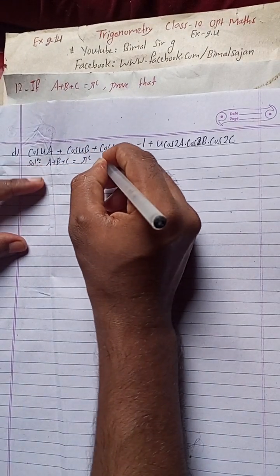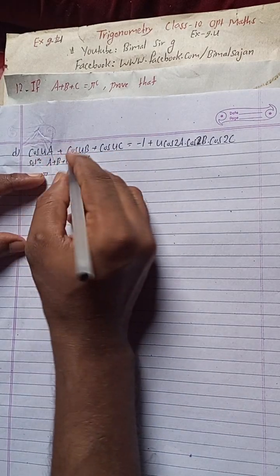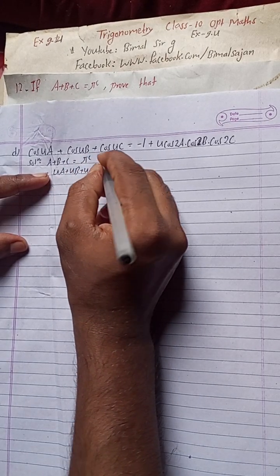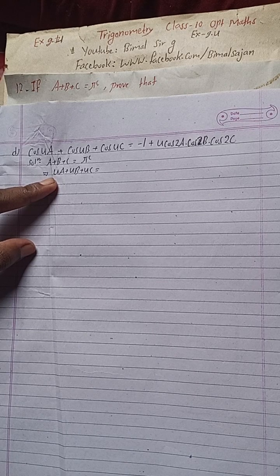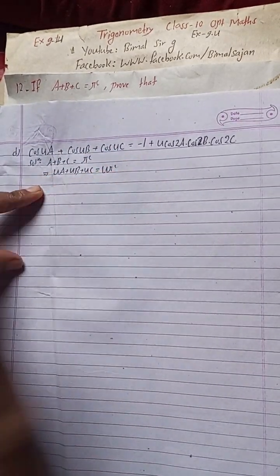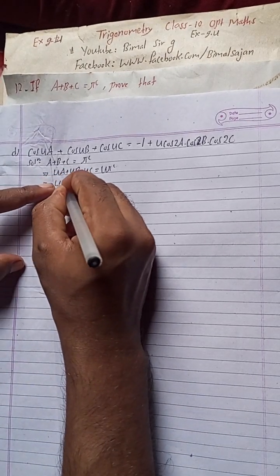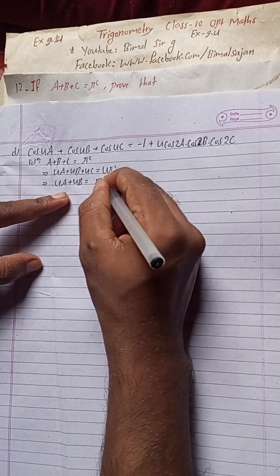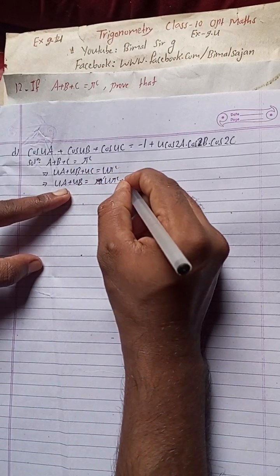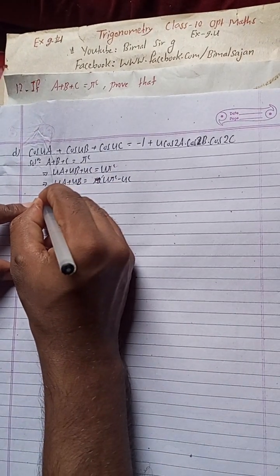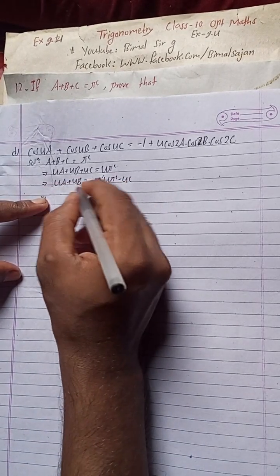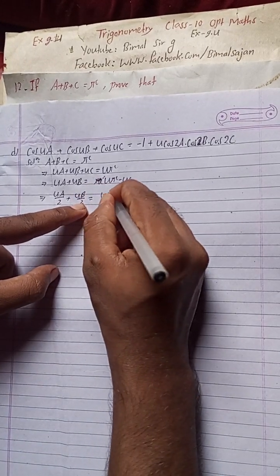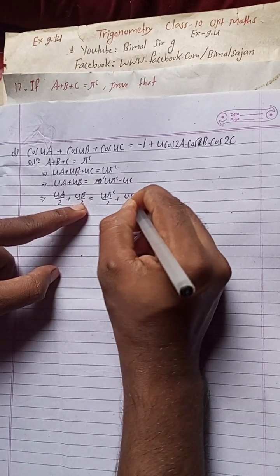Since we have 4a involved, if I multiply all terms by 4, this gives 4a plus 4b plus 4c equals 4 pi radian. Now take 4a plus 4b to one side and 4c to the other side, then divide both sides by 2: 4a by 2 plus 4b by 2 equals 4 pi by 2 minus 4c by 2, which simplifies to 2a plus 2b equals 2pi minus 2c.